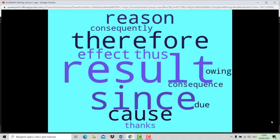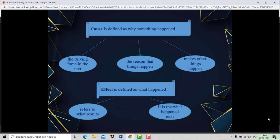Developing an understanding of how cause-and-effect informs the organization of a text enhances a student's ability to fully comprehend what they have read. Cause is the driving force in the text. It is the reason that things happen. In essence, cause is the thing that makes other things happen. Effect refers to what results. It is the what happened next in the text that results from a preceding cause. To put it concisely, cause is the why something happened and effect is the what happened.